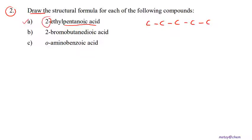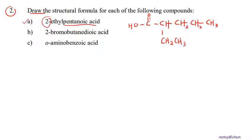Ethyl is at the second carbon. We normally number from left to right, so the second carbon gets CH₂CH₃, and the first carbon will be the carboxyl group COOH. Then we complete the remaining bonds with hydrogens. This gives us 2-ethylpentanoic acid.